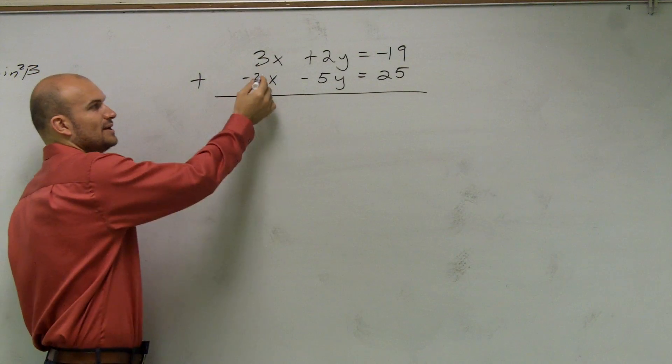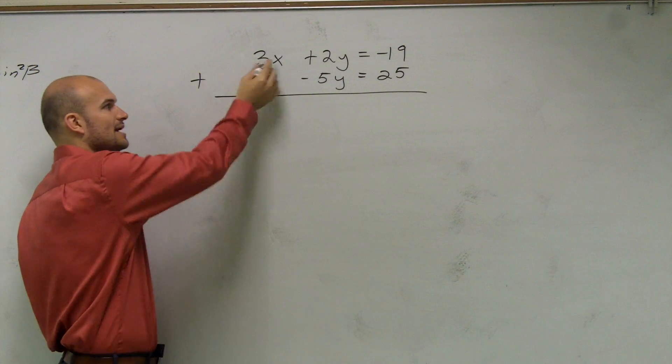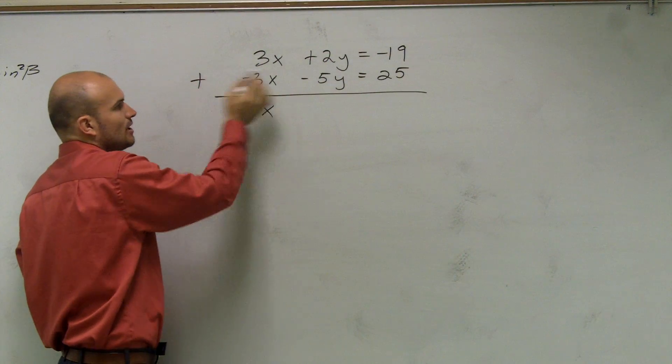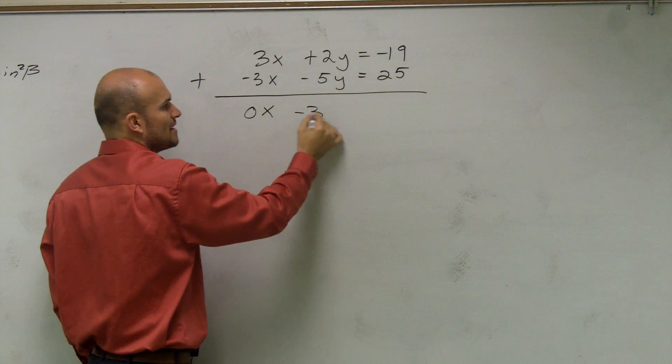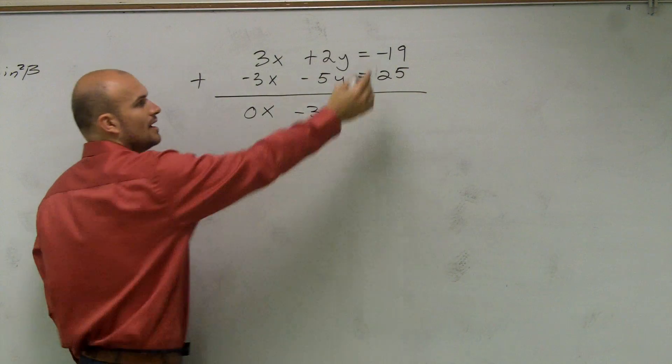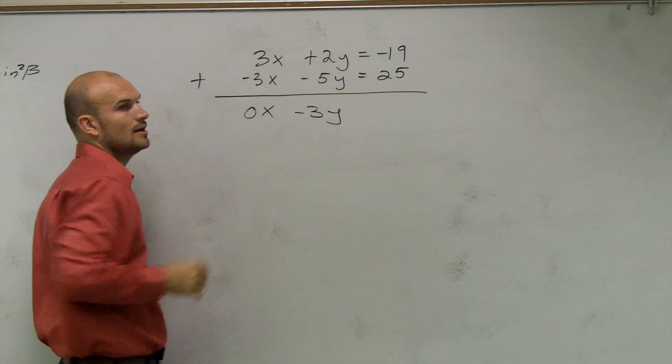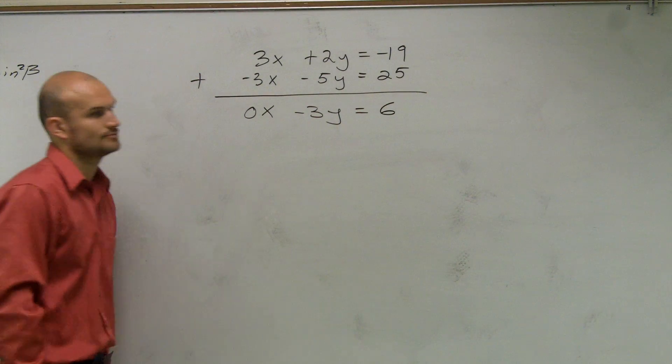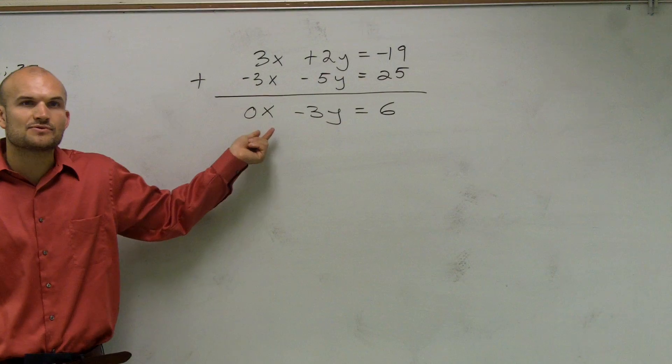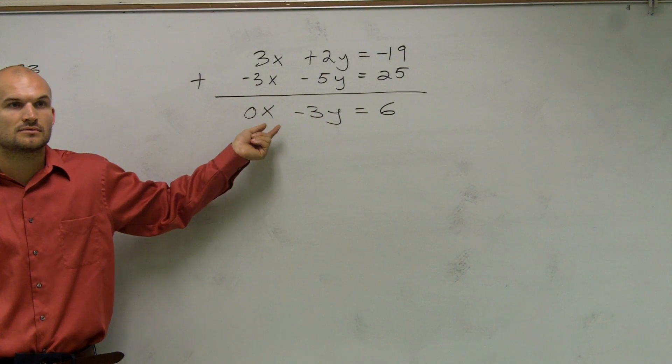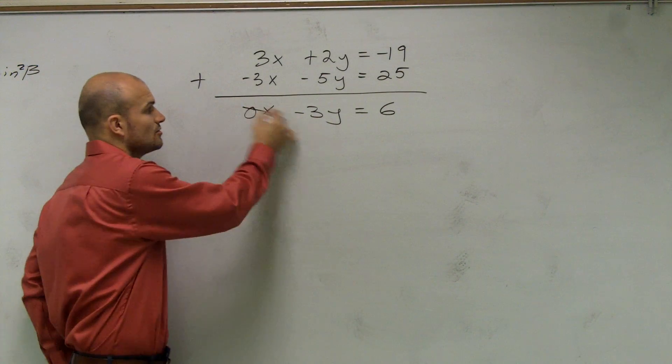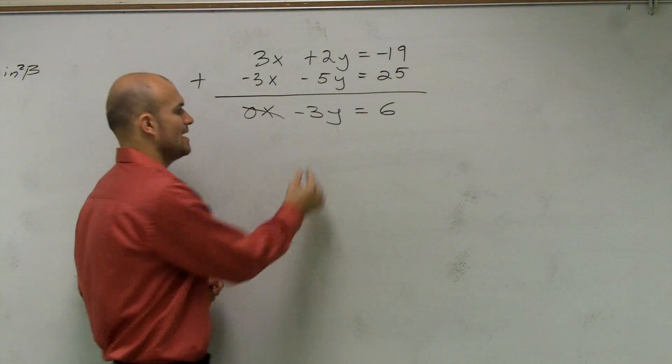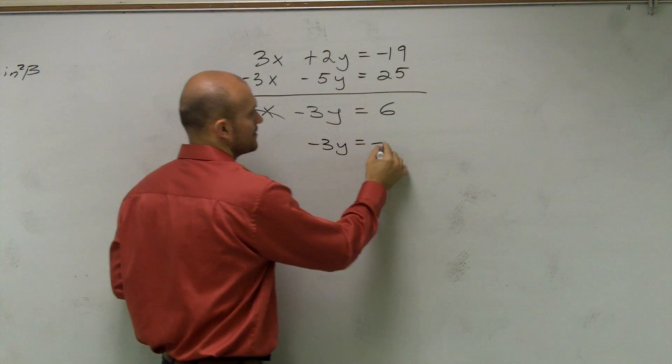So therefore, I have 3x plus a negative 3x is going to provide me 0x. 2y plus negative 5y will provide me a negative 3y. And negative 19 plus positive 25 is going to provide me 6. Now, obviously, you guys notice what happens when we have 0 times anything. It goes to 0, right? So what we say is we just eliminated our variable. So now I have a negative 3y equals 6.